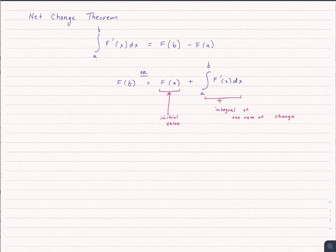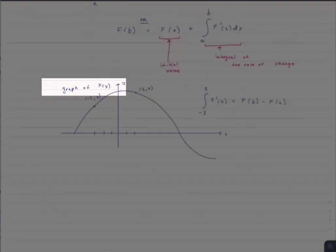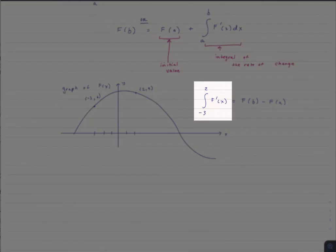Let's look at what happens when we evaluate this with a graph. So here I have a graph of f of x. Remember, this is f of x, not f prime of x. However, if I'm asked to solve the integral from negative 3 to 2 of f prime of x, that's simply equal to f of b minus f of a.